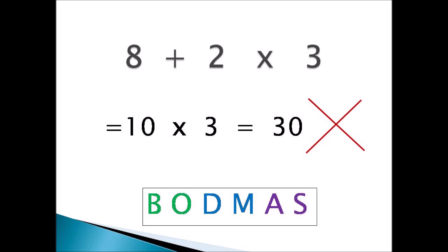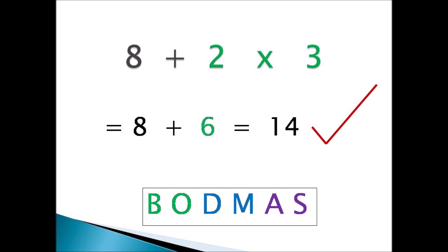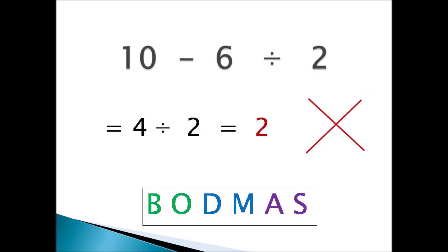Let's look at a problem: 8 plus 2 times 3. Working it straight, you might say 8 plus 2 is 10, and 10 times 3 is 30 — but that's wrong! If you look at BODMAS, you can't work it in that order. You have to multiply before you add, so 2 times 3 is 6, and then 8 plus 6 is 14. That's the correct answer. You cannot add and then multiply; you have to multiply and then add.